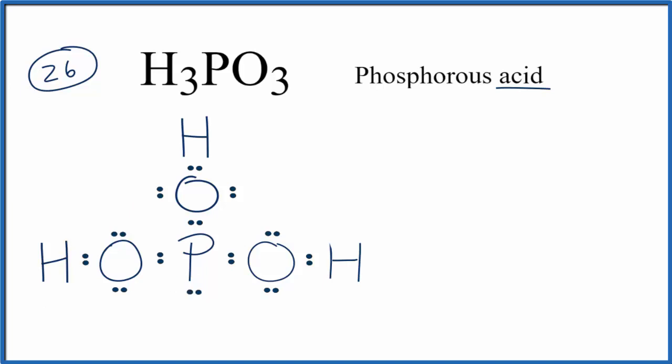This is a pretty good Lewis structure for phosphorous acid. If you calculate the formal charges, you'll find that there's zero for each of the atoms, which means this is a pretty likely structure. However, there's another way we could draw this structure.